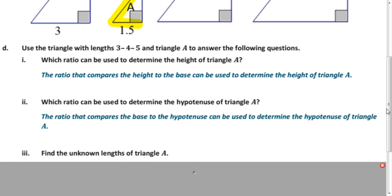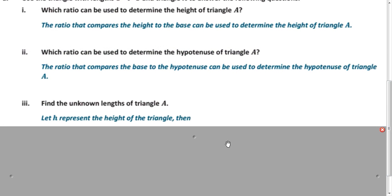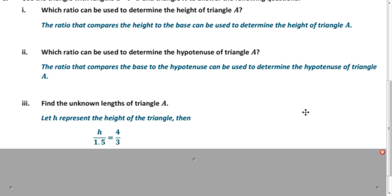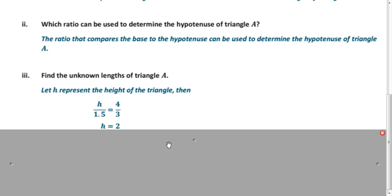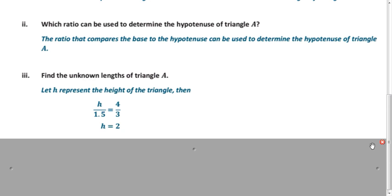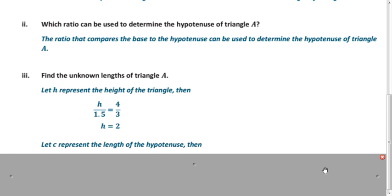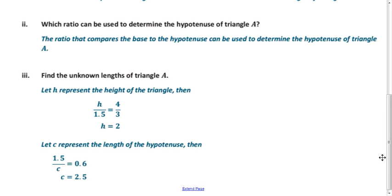Now, how do we find the unknown lengths? We'll find the height using h. The relationship between the height and the base is 4 to 3, so we set up that proportion, use the cross product, divide by 3, and you get 2. To find the hypotenuse, we use the ratio that compares the base to the hypotenuse, which is 0.6 or 3 fifths — both the same number. Use the cross product and you get 2.5.